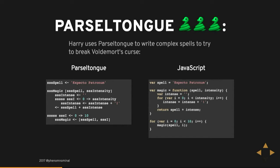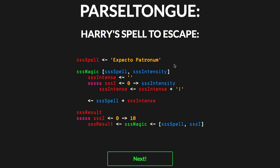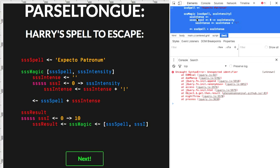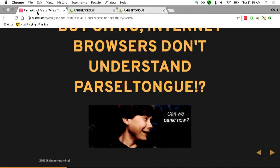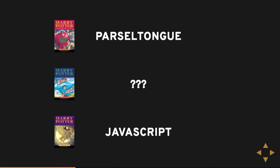Harry, because he can only speak Parseltongue and he's stuck on the internet, is trying to make up complex spells in Parseltongue to fight that curse and break out of the internet. On the left we have a little script that just takes a spell — expecto patronum — and does it a bunch of times with more exclamations, so hopefully it works better. On the right is the equivalent JavaScript of what that thing would create. But of course, internet browsers don't understand Parseltongue, and probably neither do any of us. So we're going to have to come up with a way to take the Parseltongue that Harry is using and turn that into JavaScript so that he can escape the internet. We have Parseltongue at the start, we're going to do something in the middle, and we're going to hopefully end up with JavaScript.